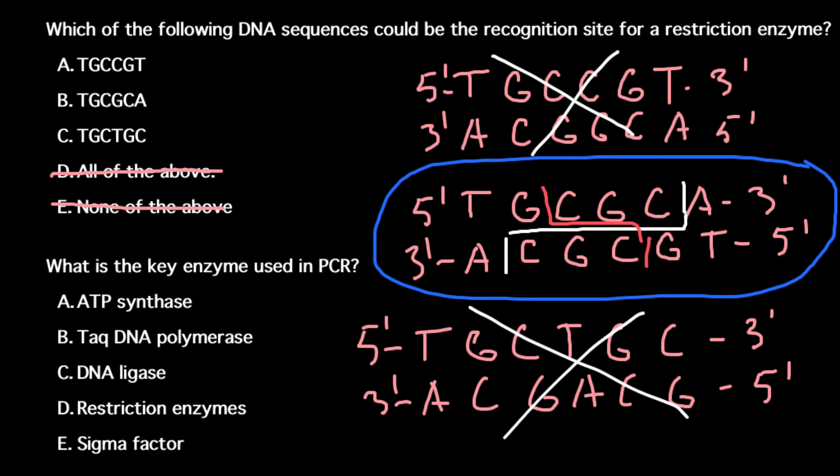Next question: What is the key enzyme used in PCR? Once again, here are five answers to choose from, and the correct answer would be answer B, Taq polymerase.